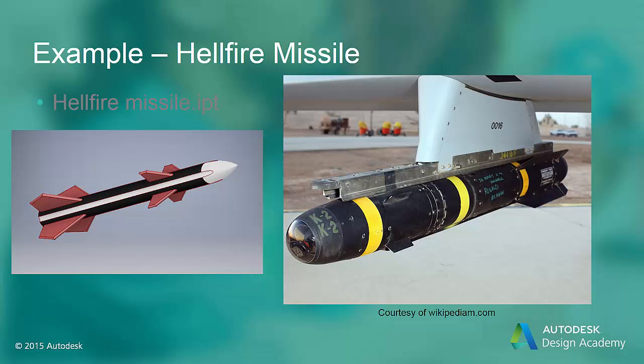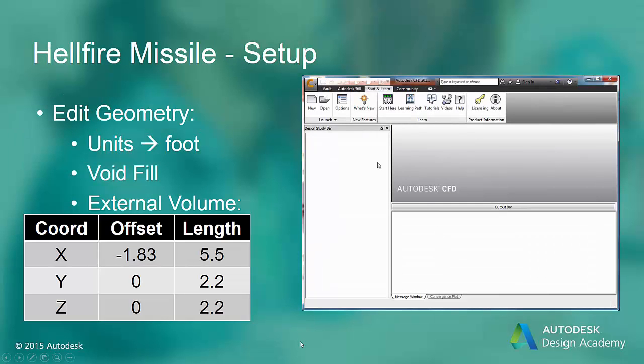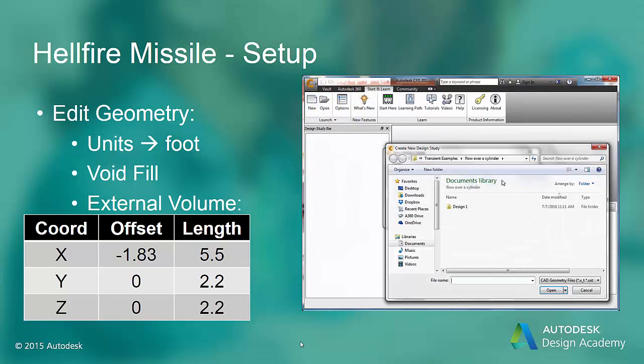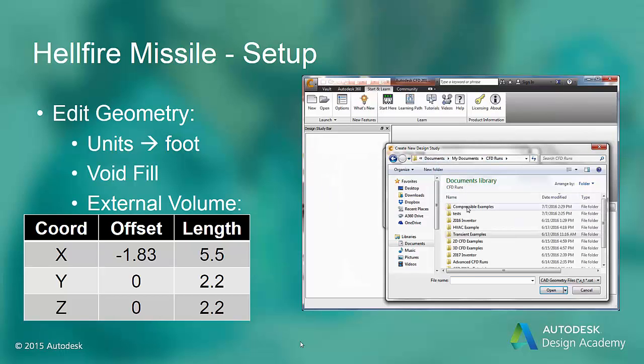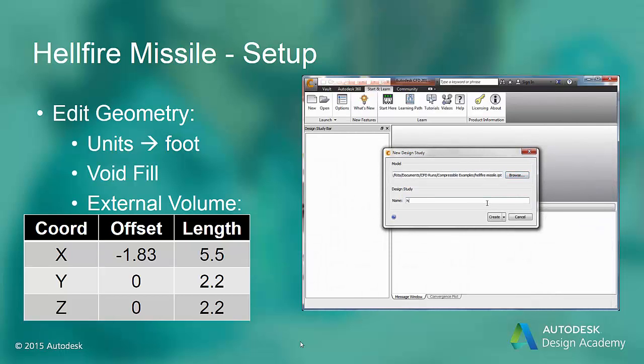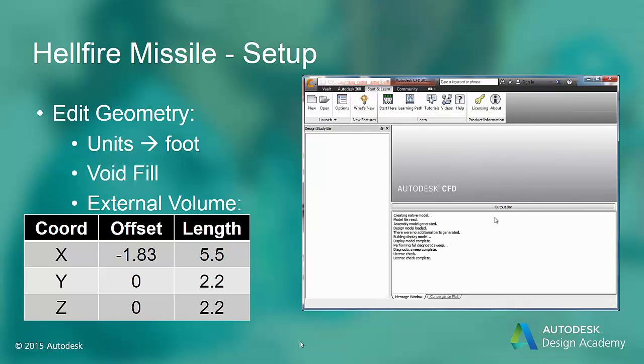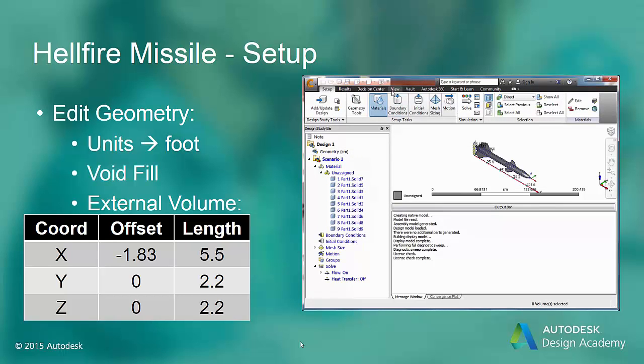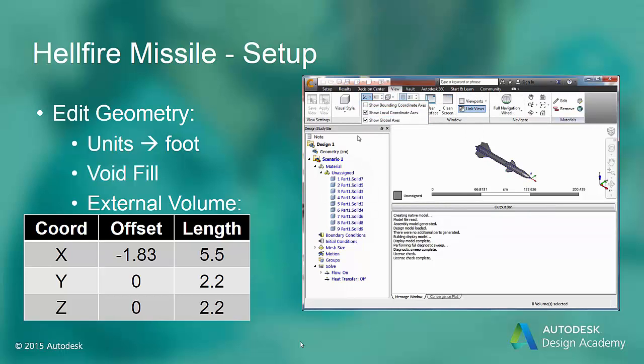In our second example, we'll look at a Hellfire missile. This is an air-to-surface weapon used to penetrate armored vehicles like tanks. They are also used for precision strikes against ground targets. Create a new design study using the hellfiremissile.ipt file created in Inventor. First, we're going to set the units to feet after we change our view.